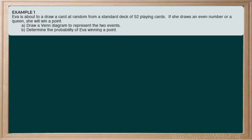To do so, we're going to start by analyzing our problem and determining whether or not the sets are going to intersect. In this game, she will win a point by selecting an even number or a queen. In this case, it is not possible to select a card that is both an even number and a queen. That means that these two sets are going to be disjoint and we would describe the events as being mutually exclusive of one another.